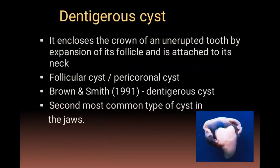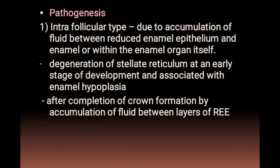The dentigerous cyst encloses the crown of an unerupted tooth by expansion of its follicle, which is attached to the tooth neck. Also known as a follicular or pericoronal cyst, it was named by Brown and Smith. The cyst involves two-layered reduced enamel epithelium, which normally covers newly formed enamel, disintegrates upon eruption into the oral cavity, merges with the gingival epithelium, and becomes junctional epithelium. If it fails to disintegrate and fluid collects between the enamel and the reduced enamel epithelium, cyst formation occurs.